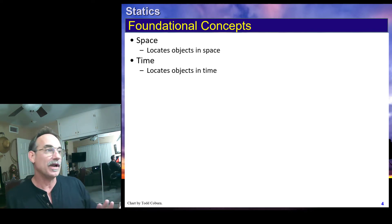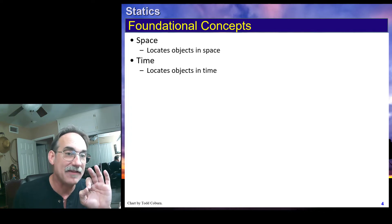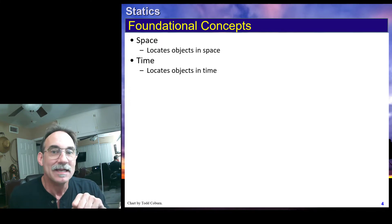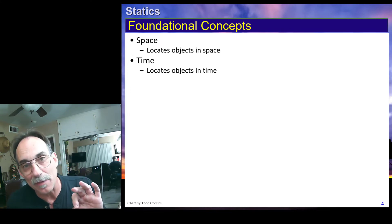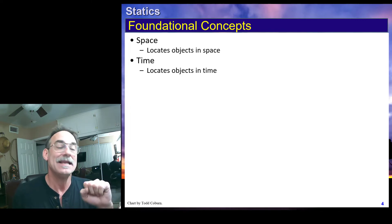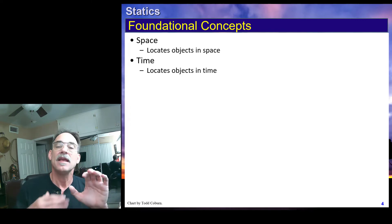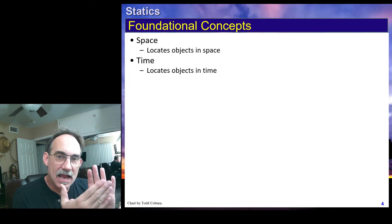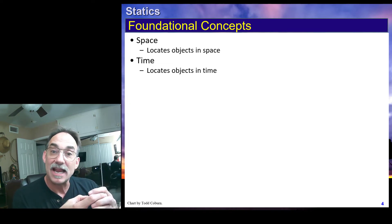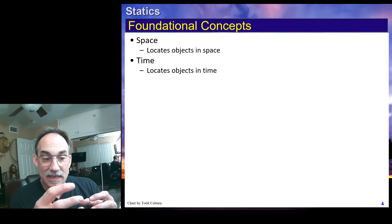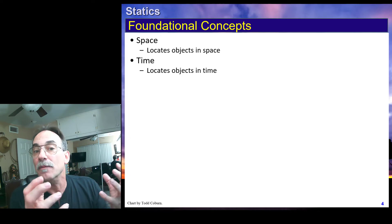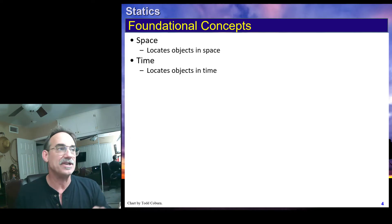Time: we locate things with time. If somebody tells you they're going to give you a million dollars, your first question should be when — because if that million dollars is coming a hundred years after you're dead, it isn't going to do you any good. Time is important because the time rate of things helps us understand motion. We have something here, and we have it there at different times — therefore we can start understanding the motion, velocity, and acceleration of the body.